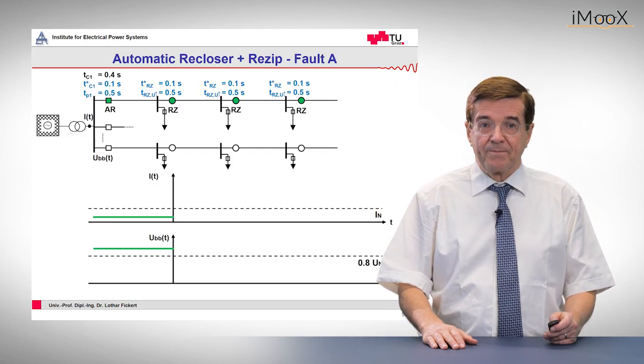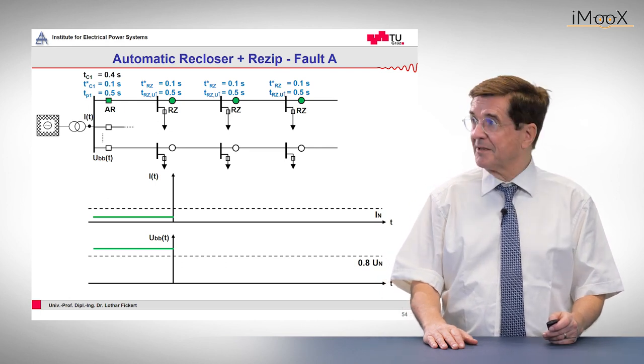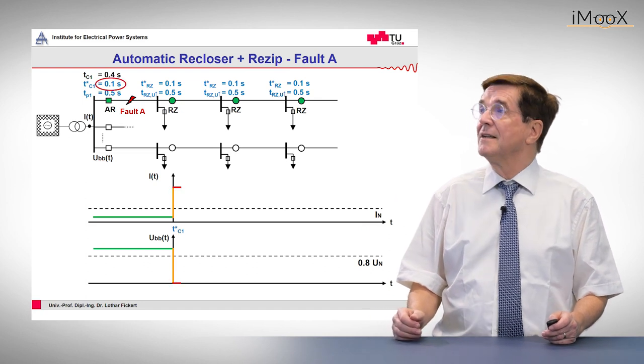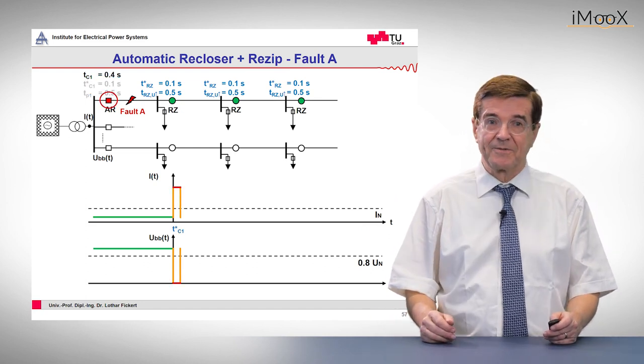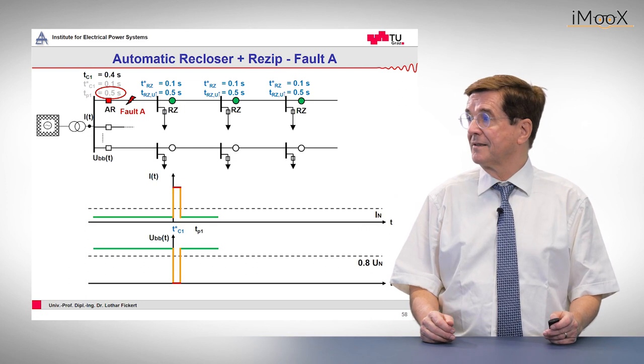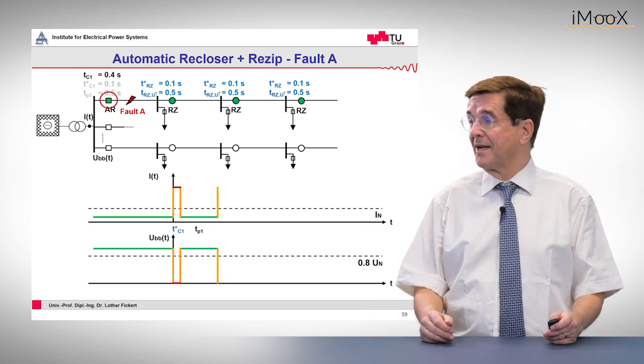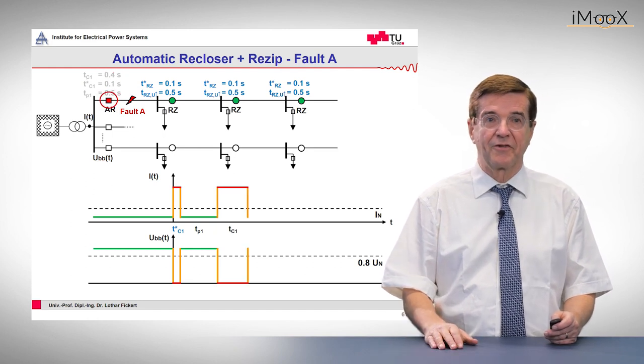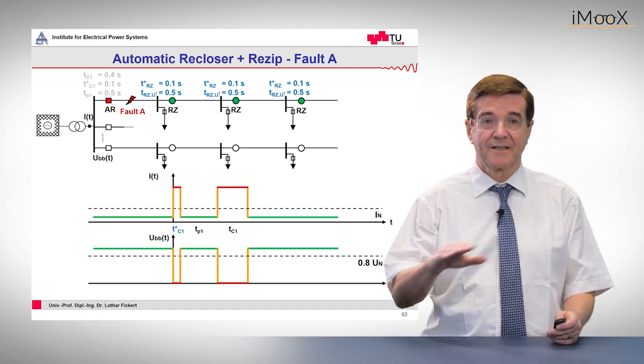Now for the beginning, the fault at the beginning of the line, we have a very similar occurrence. So the fault comes up, the first auto recloser trips immediately, and after its recloser time it recloses on the fault and trips out with a definite fault. And again, this was it.